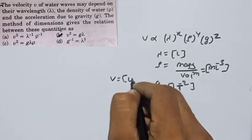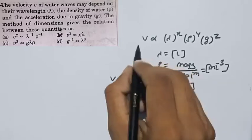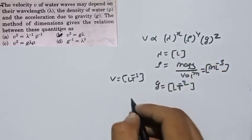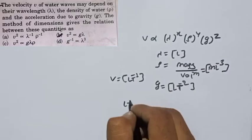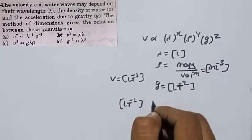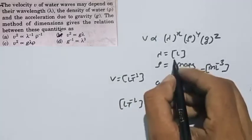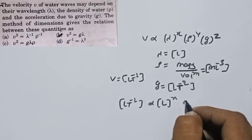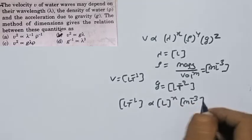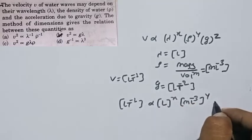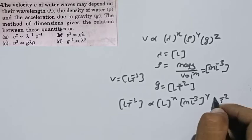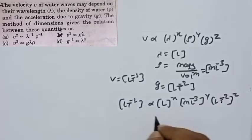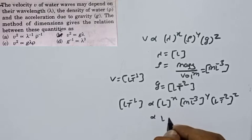Ab in values ko compare karte hain. LT⁻¹ is proportional to lambda^x times ML⁻³^y times LT⁻²^z. Expanding this: L exponent becomes x minus 3y plus z, M exponent is y, and T exponent is minus 2z.